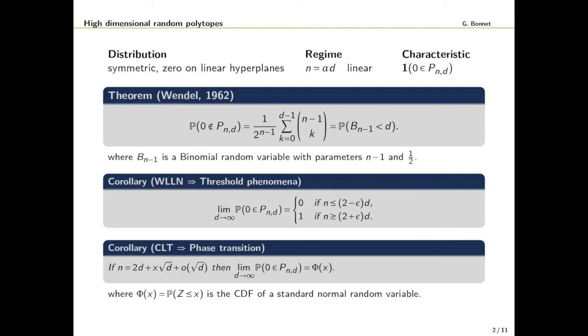Once one has shown a threshold phenomenon the next step is to look at what happens at the threshold and the answer is given by the CLT here. So if we take n of the form 2d + x times square root of d, then the limit of the probability that the origin is contained in the convex hull is precisely φ(x), where φ(x) is the cumulative distribution function of a standard normal random variable.